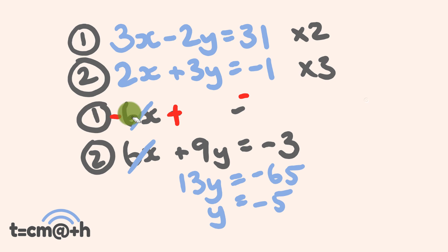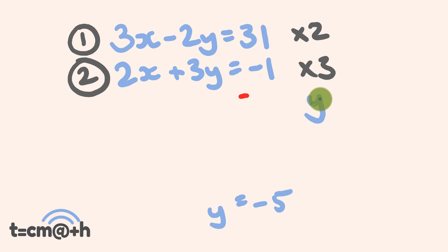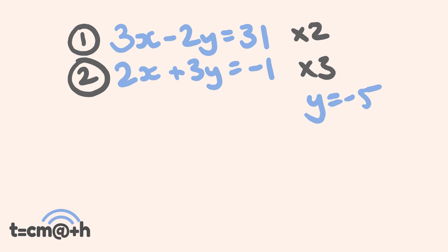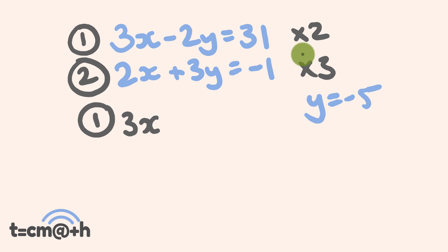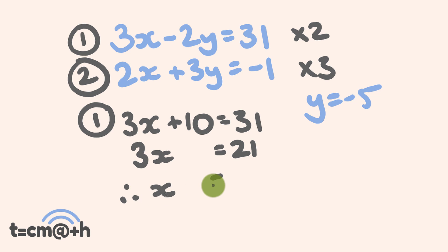So we know that y equals negative 5. Now let's substitute this into one of our equations. Let's substitute into equation 1. We have 3x, and substituting negative 5 in: negative 5 times negative 2 is plus 10 — watch out for your negatives — and this is equal to 31. So 3x plus 10 equals 31. Let's take 10 off both sides — that's equal to 21 — and therefore x is equal to 21 divided by 3, which is equal to 7. We've got both our answers: y equals negative 5 and x is equal to 7.